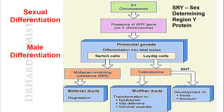In male differentiation, the chromosome is XY. On the Y chromosome, there is the SRY gene — the sex-determining region of Y. Due to the presence of SRY, the primordial gonads differentiate into fetal testis.